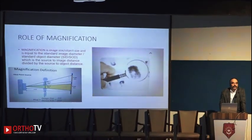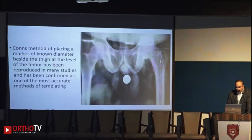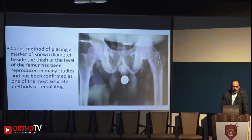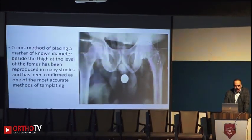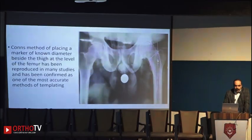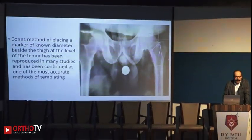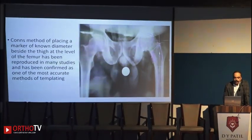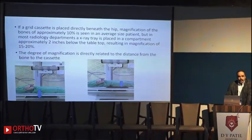Since none of us follow that formula, Conn decided to place a coin close to the femur and take an X-ray. The coin measurement is already known, and hence any magnification can be measured accordingly. Studies have confirmed that this is one of the most accurate methods of templating.